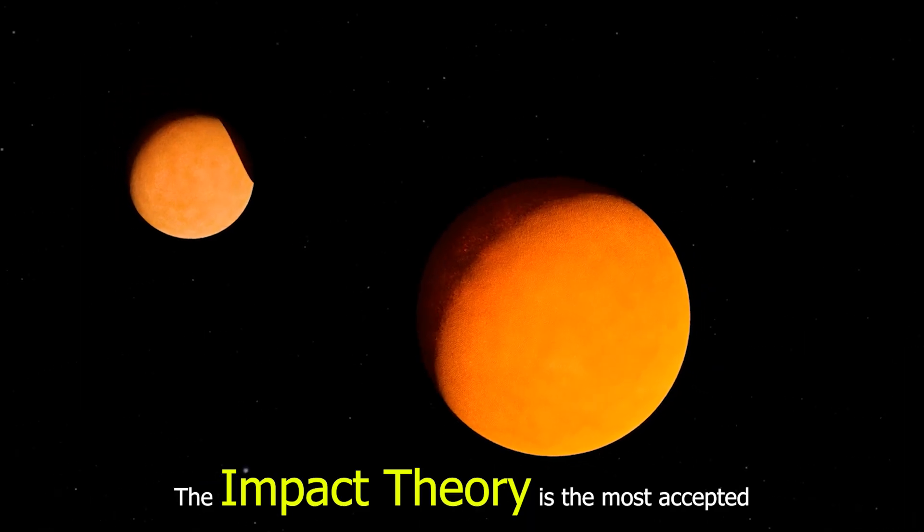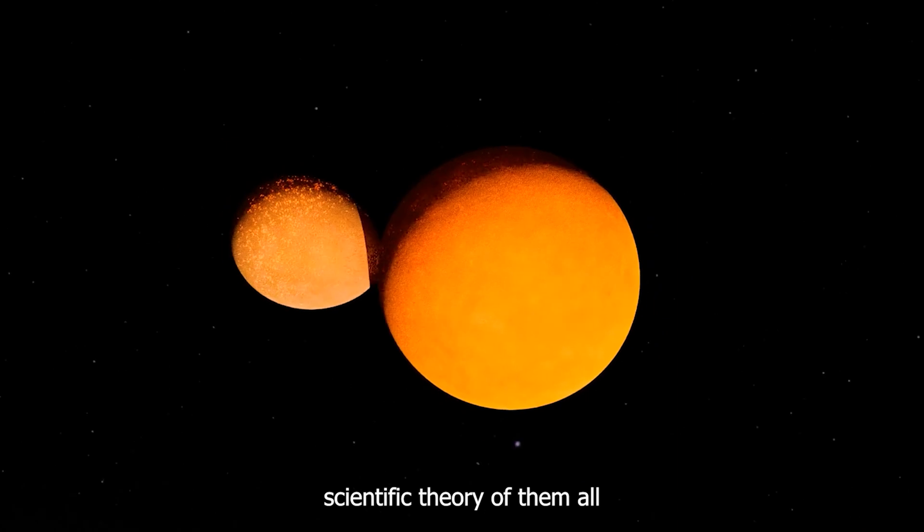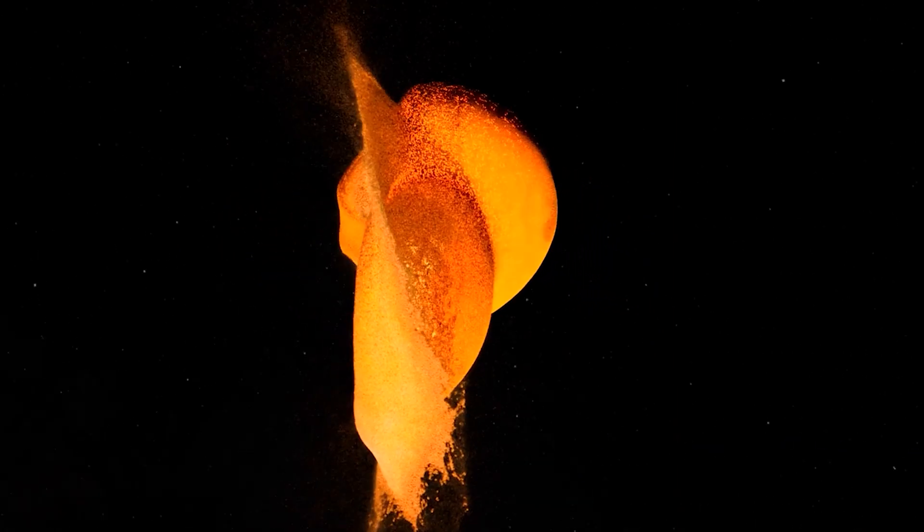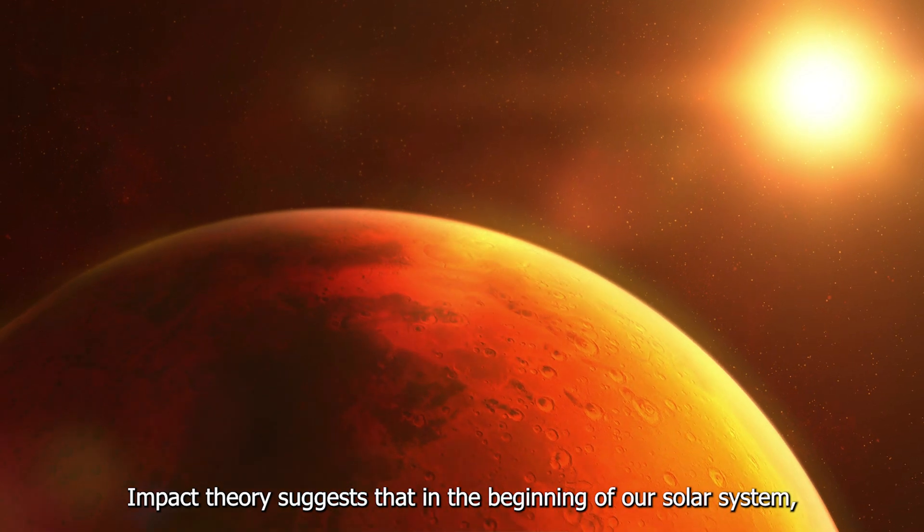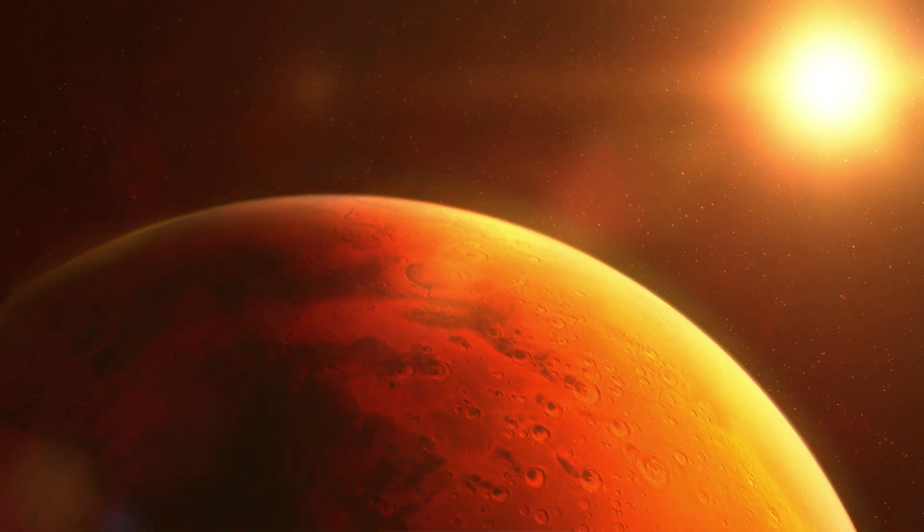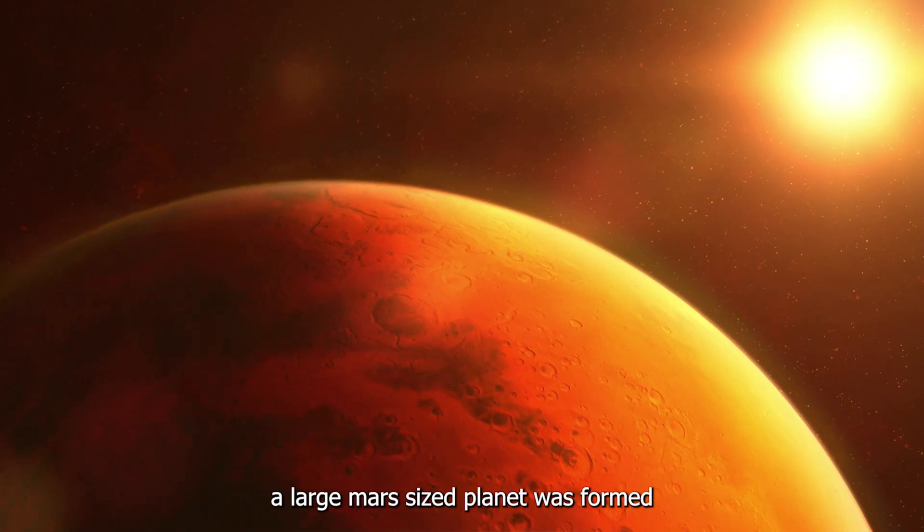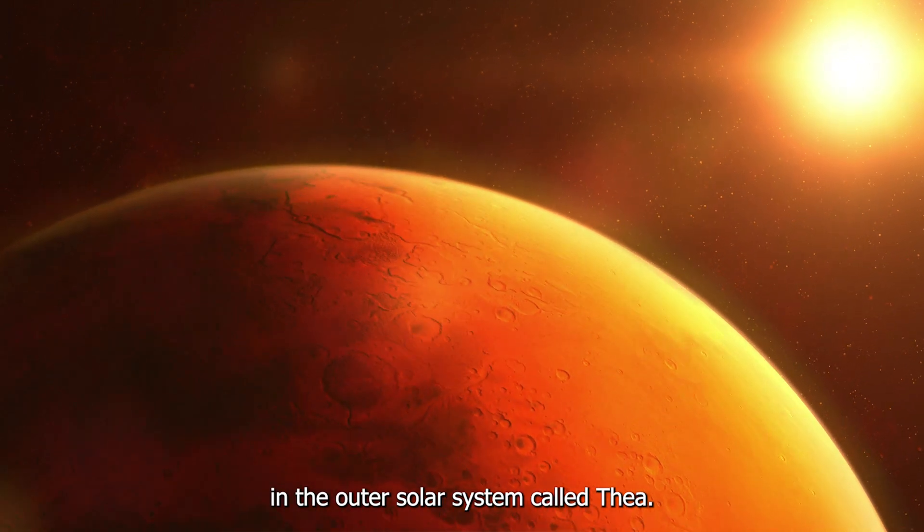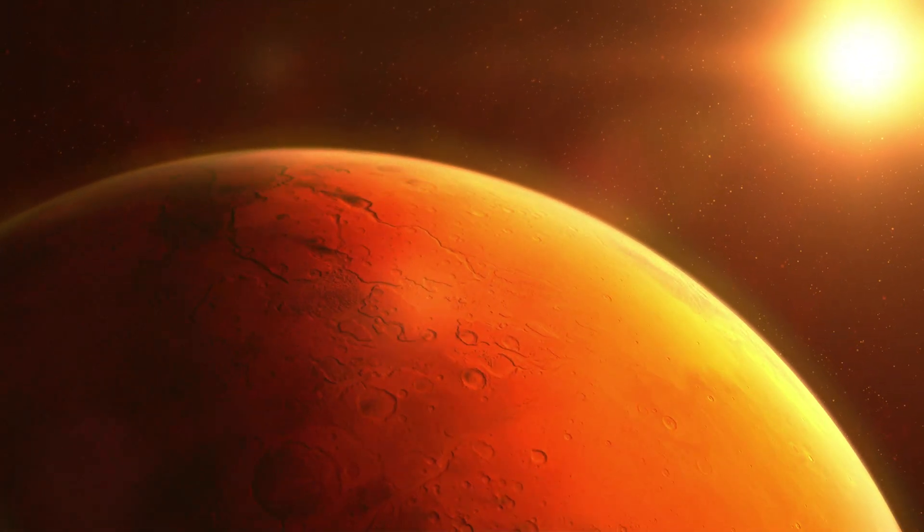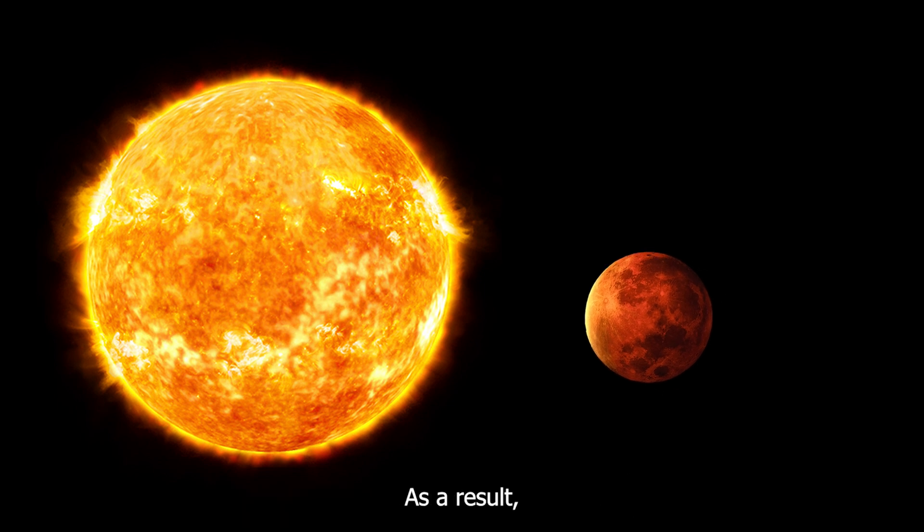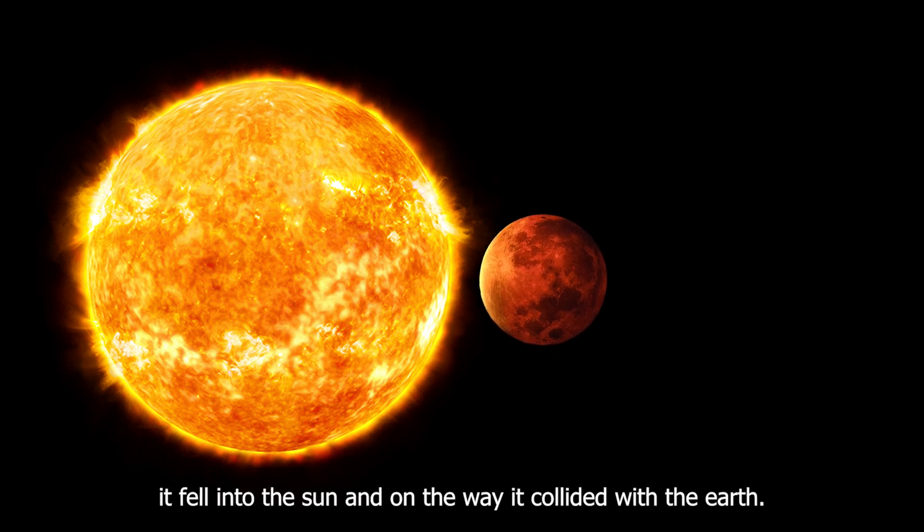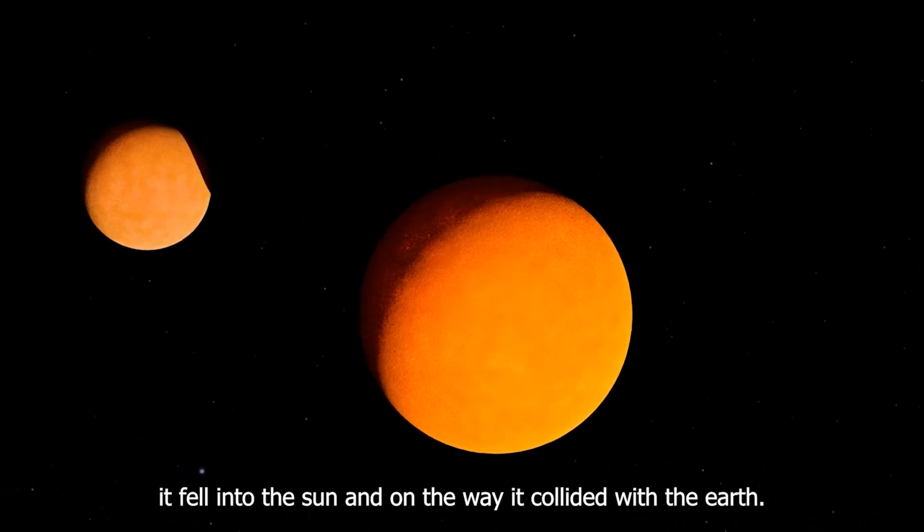The impact theory is the most accepted scientific theory of them all. Impact theory suggests that in the beginning of our solar system, a large Mars-sized planet was formed in the outer solar system called Thea. Thea didn't have a stable orbit around the Sun. As a result, it fell into the Sun and on the way it collided with the Earth.